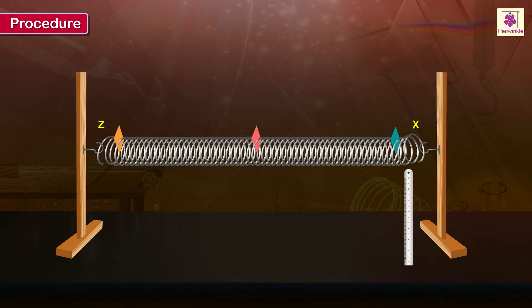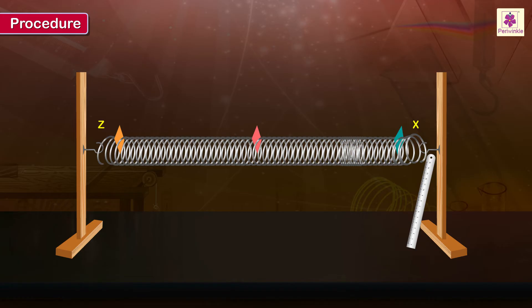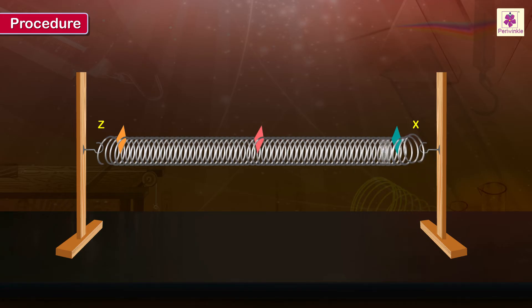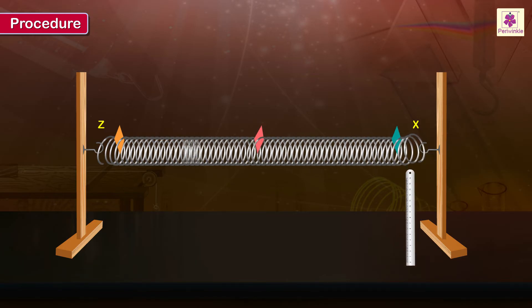When the adhesive or gum dries, take a steel ruler and using its one end like a plectrum, sharply pluck only once one end of the slinky in a direction parallel to the stretched slinky. Observe how the pulse created by the plucking appears to travel from the end x to the end z of the slinky.